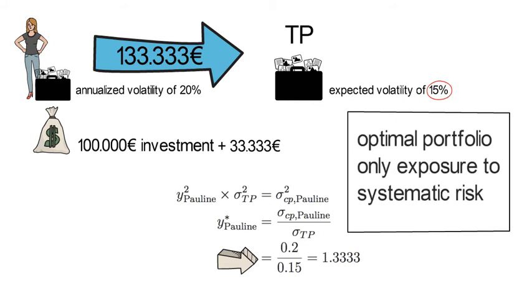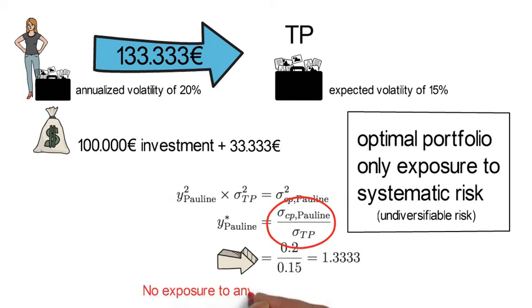Notice, Pauline's optimal portfolio will only have exposure to systematic risk. Systematic risk is also called undiversifiable risk. And here is why. WTP has 100% exposure to systematic risk. The ratio sigma CP over sigma TP quantifies the optimal amount of leverage that is going to be applied to the systematic risk of the TP portfolio. So Pauline and any other employee of Daimler will therefore not be exposed to any type of asset-specific risk.